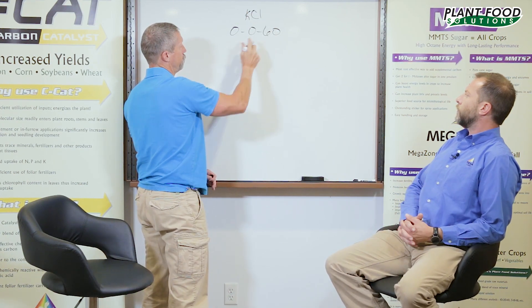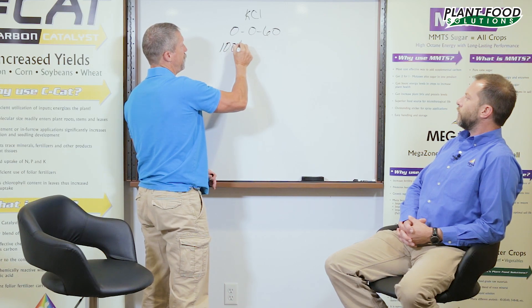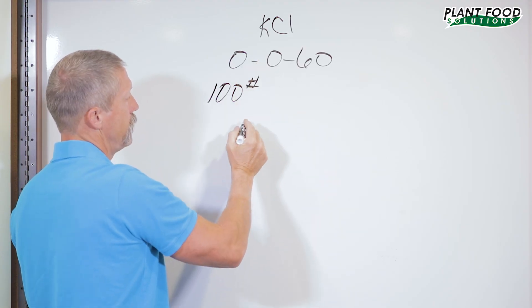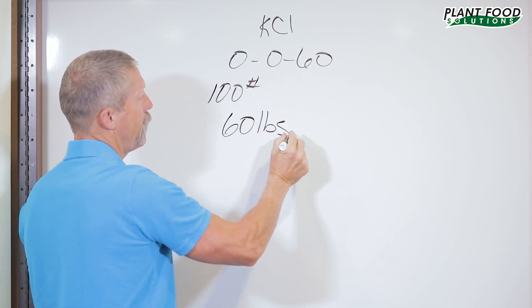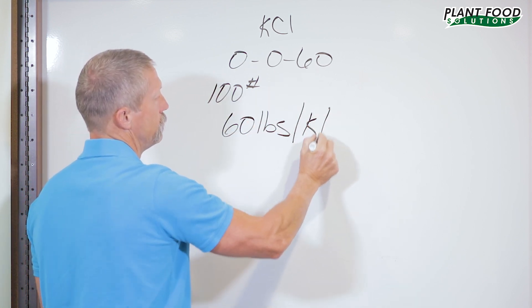If a farmer puts on a hundred pounds of muriate potash, that means it's 60% potash. That means he's getting 60 pounds of potash per acre.